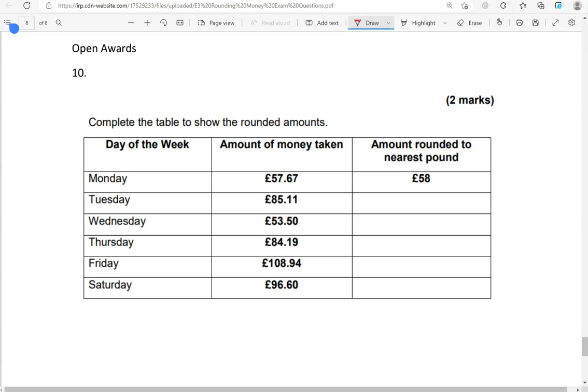Complete the table to show the rounded amounts. We've got day of the week from Monday to Saturday, amount of money taken, amount rounded to the nearest pound. So, 1 has been done already for us. £57.67 has been rounded to £58. Now, we've got for Tuesday, £85.11. So, that's the pounds column. Cut-off point is here, the decimal point. Looking on the right, we've got 11 pence. So, that's below 50. So, we're going to keep this as £85.